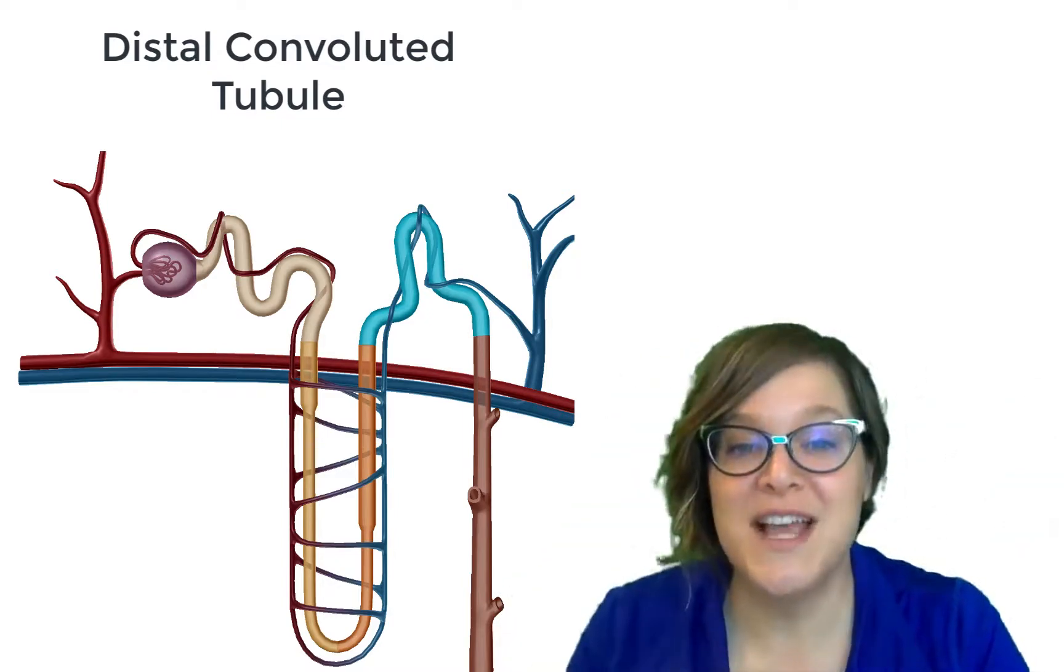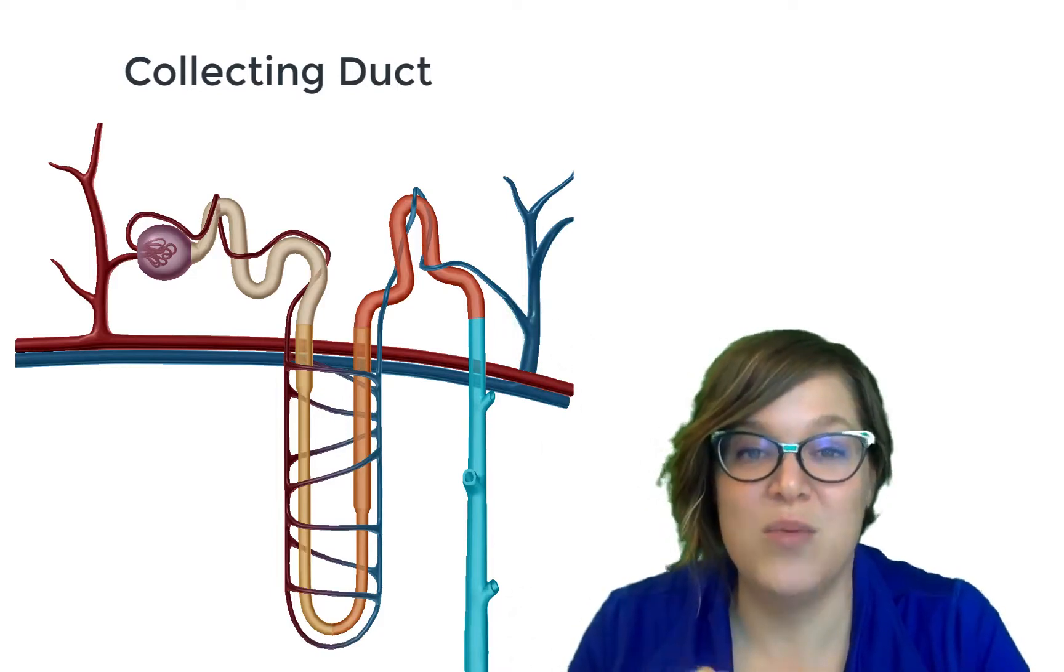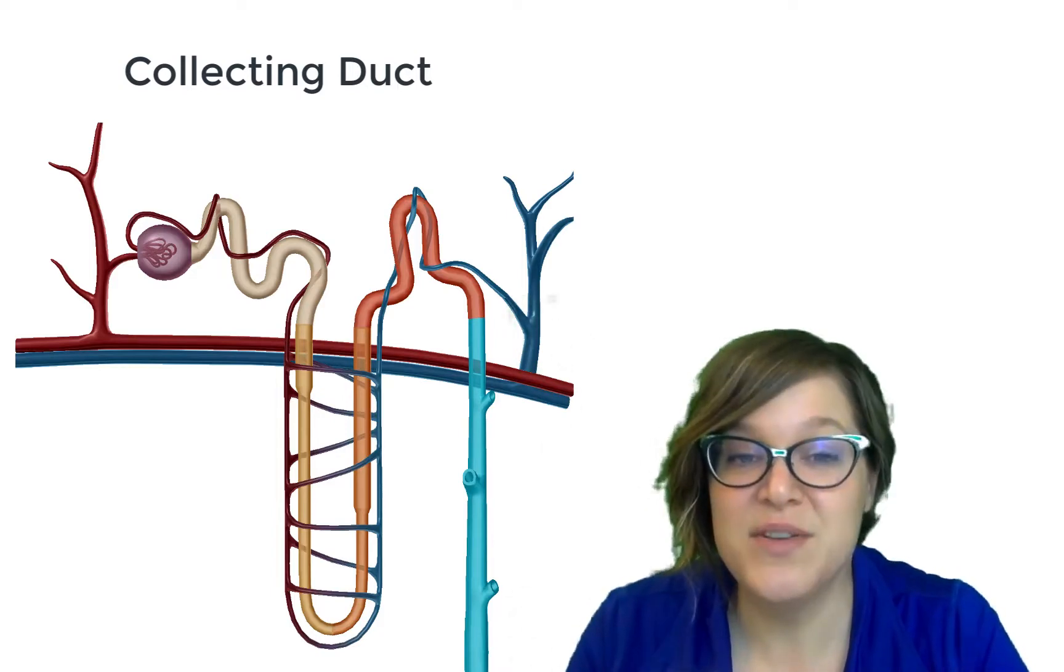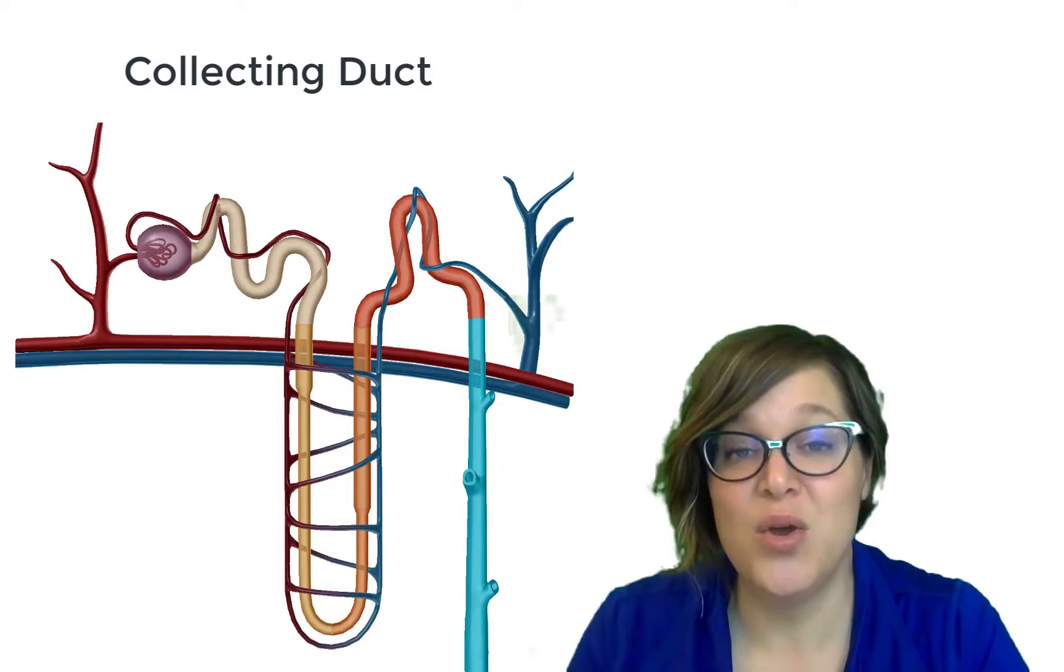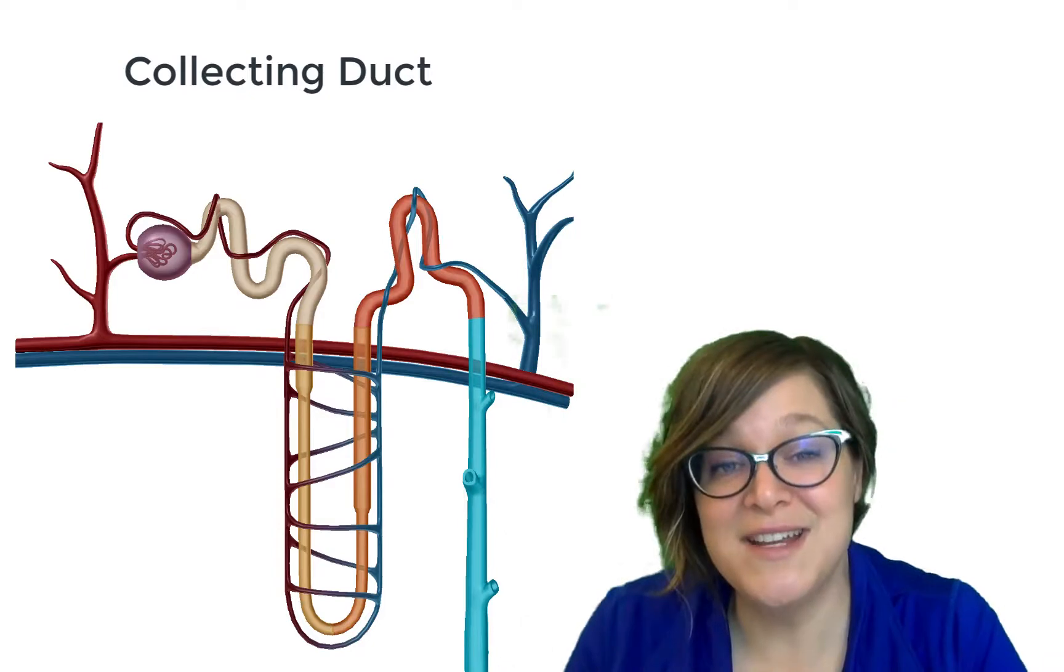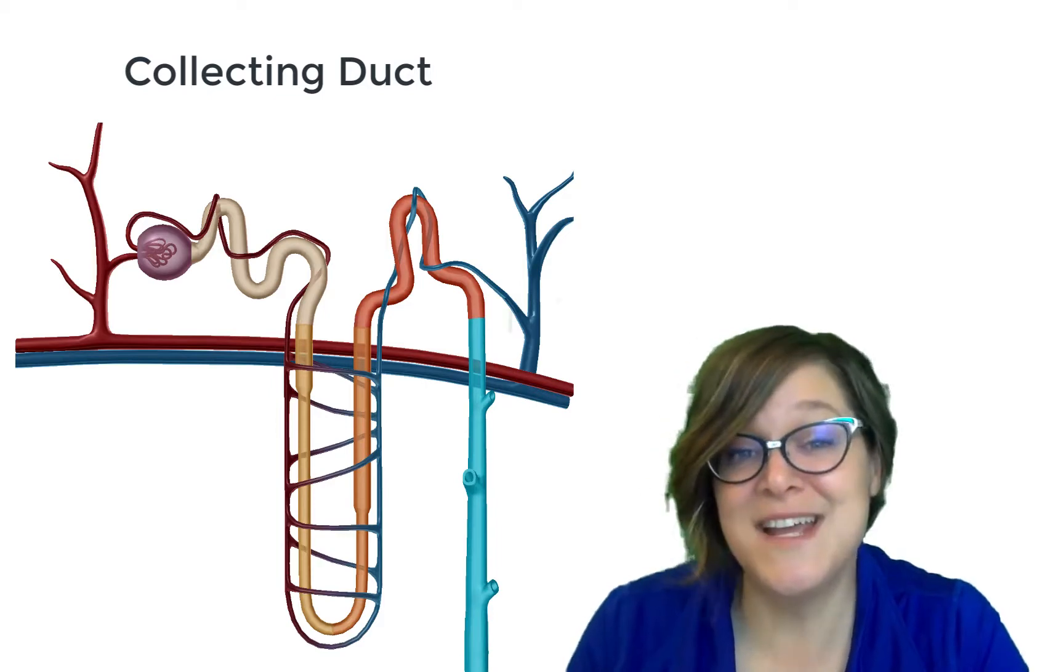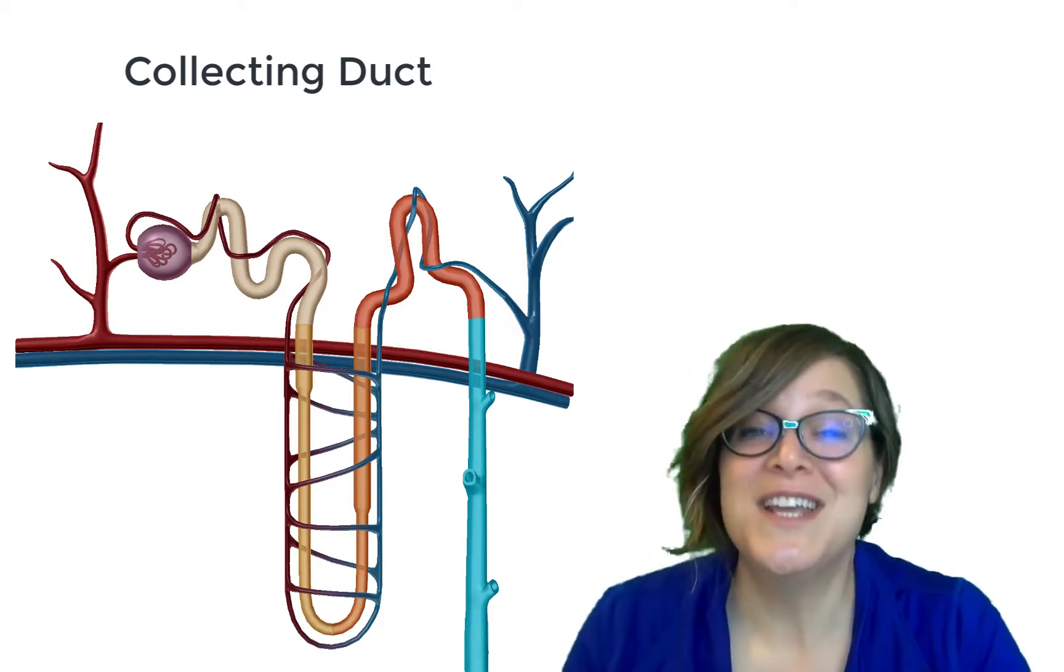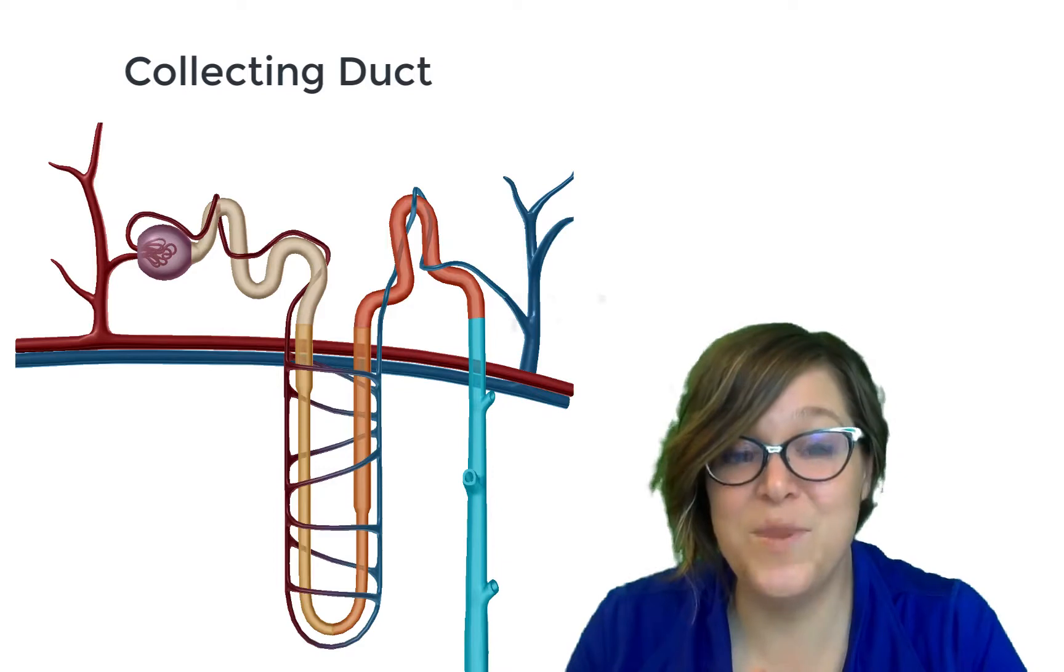When we go down the collecting duct, which is the final segment, we are fine-tuning that waste. The distal convoluted tubule and the collecting duct can be hormonally regulated in how much they take in. Why would this be the case? Well, let's say you haven't had a lot of water today, then your body doesn't want to get rid of much. So you're going to release a hormone that's going to cause you to absorb more water. On the opposite end, maybe you've had too much salt, and now we're going to secrete more salt.